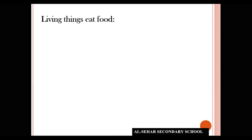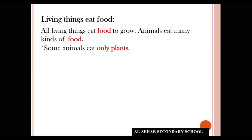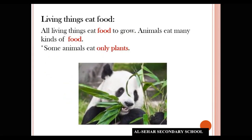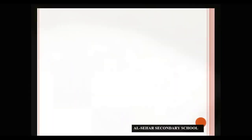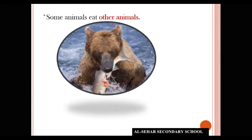All living things eat food to grow. Animals eat many kinds of food. First, some animals eat only plants. Plant-eating animals are called herbivores. Next, some animals eat other animals and the flesh of animals. These animals are called carnivores.